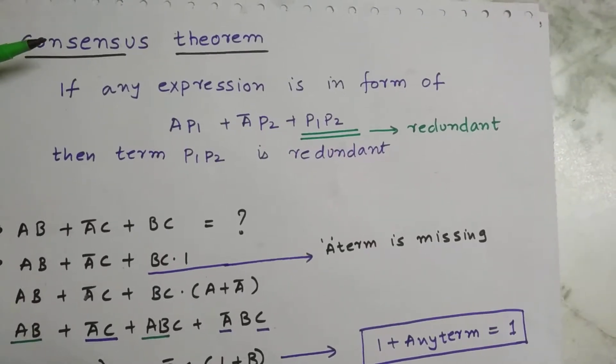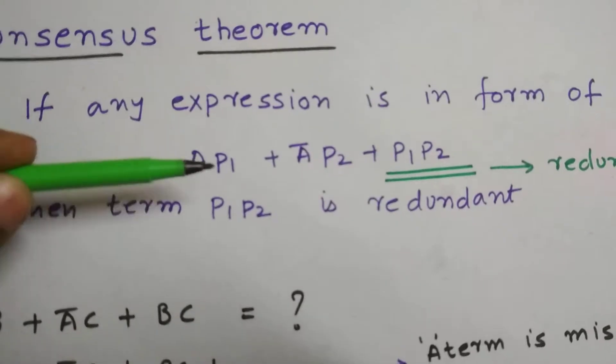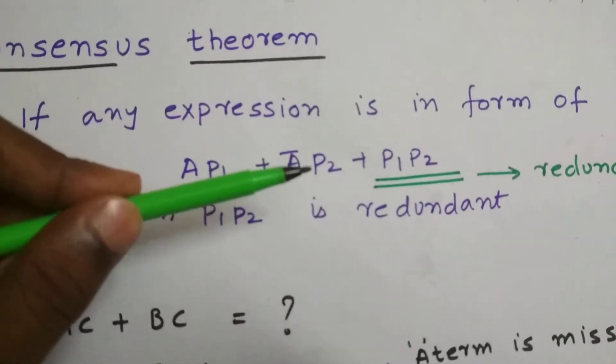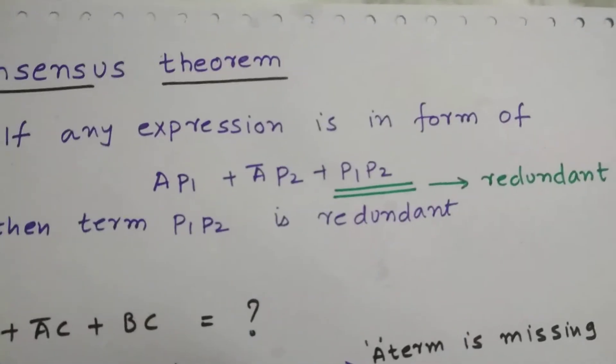Hey guys, today's topic is consensus theorem. As you can see, this expression A P1 plus A bar P2 plus P1 and P2. Here P1 and P2 is a redundant term.